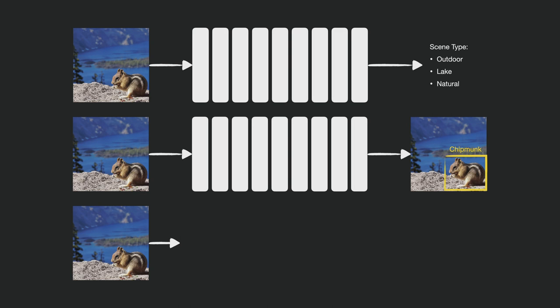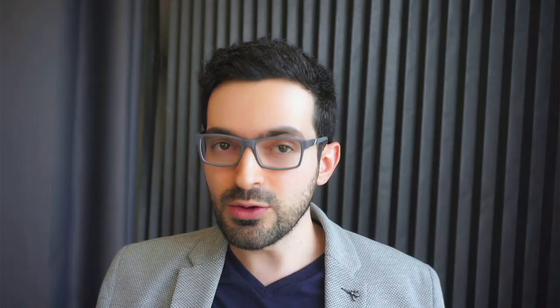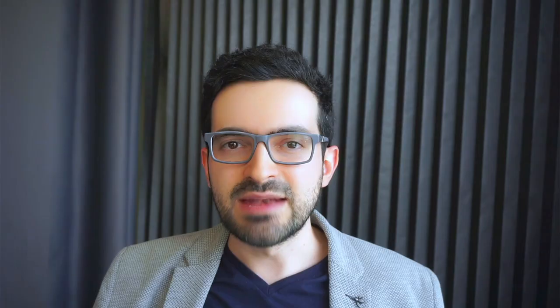For example, if we want to classify a scene, detect objects in it, and also output a segmentation mask, do we really need to train three separate models? All these three tasks involve some level of scene understanding, so we could potentially save some memory, computation, and power by building a unified multi-task model. Efficiency is especially important in embedded applications — if you're running your model on low-powered devices, any amount of power you can save can make a difference.